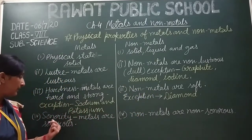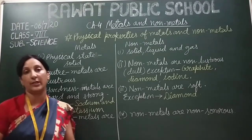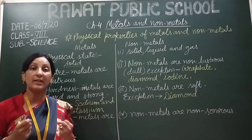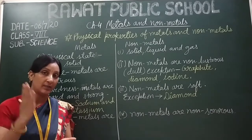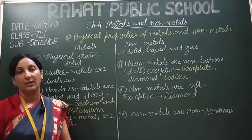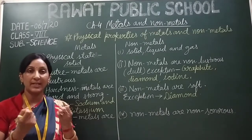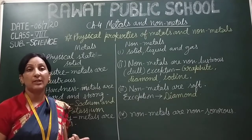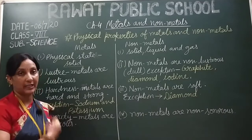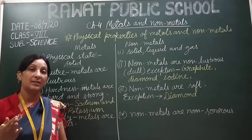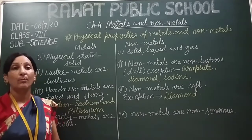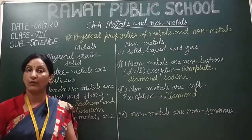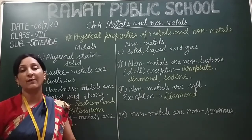Now we will compare the next property, that is sonority. What is sonority? Sonority means when metals are struck with a hard substance, they give a ringing sound. So we can say that metals are sonorous, and due to this property, some musical instruments are also made from metals — for example, the bells used in our schools are made of metals. On the other hand, non-metals are non-sonorous: when struck with a hard substance, they do not give any ringing sound.